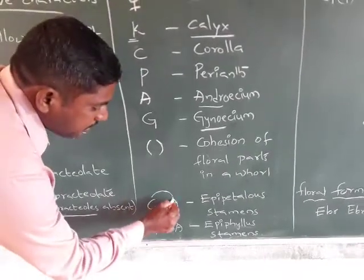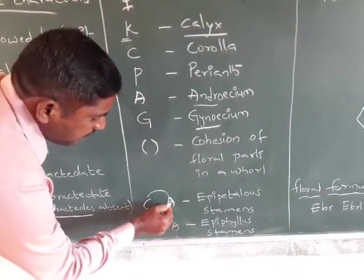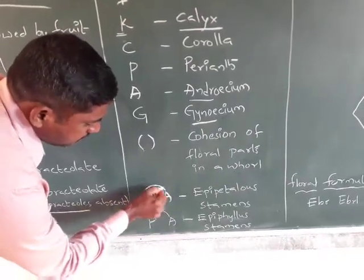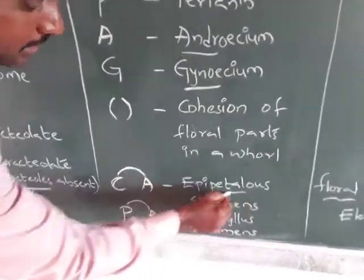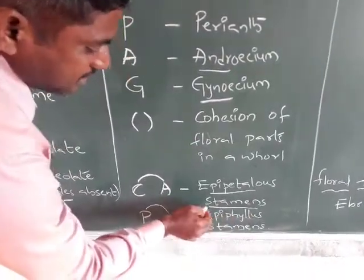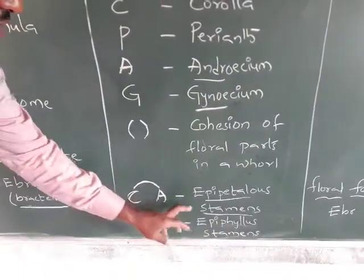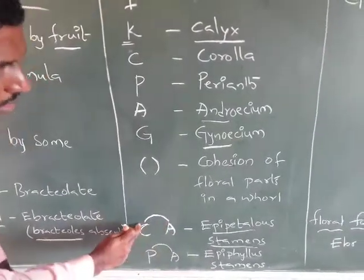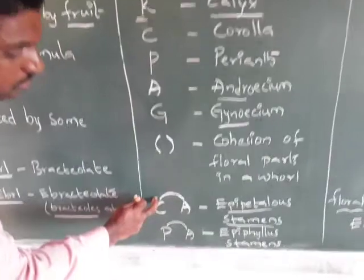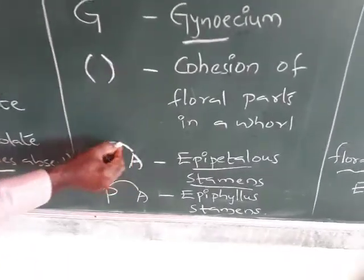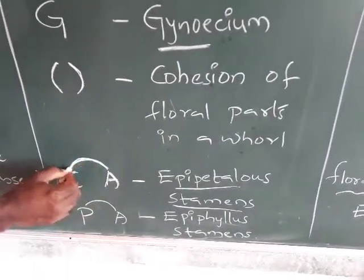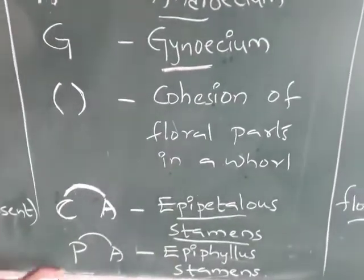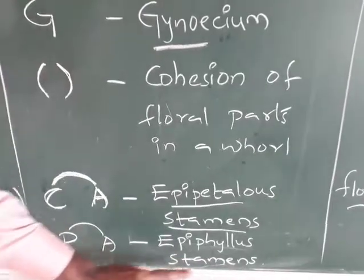When the corolla and androecium share a symbol connecting them, it indicates epipetalous stamens — meaning the stamens are attached to the corolla. That attachment is shown by a specific structure symbol joining them.